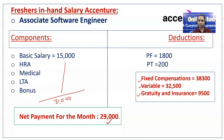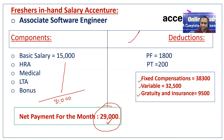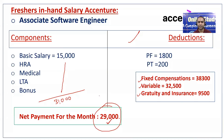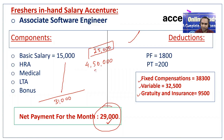Now let us come back to the salary. Your package is 4.5 LPA, but you are getting only 29,000 in hand. If you divide 4.5 lakhs by 12 you should get 37,500, so where does all your money go? Out of 4 lakhs 50,000, first 25,000 rupees will be your joining bonus, and we will subtract that because it is a one-time payment.